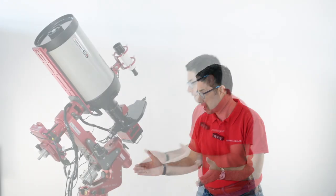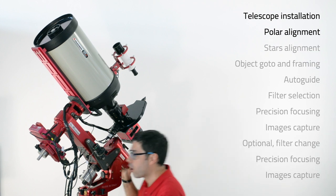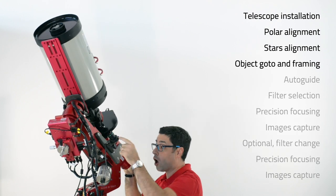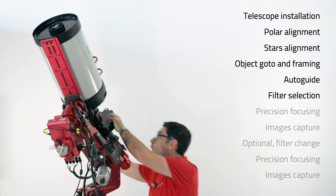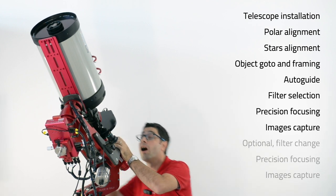A typical long exposure astrophotography session requires installation of the telescope in the field, polar alignment, alignment of the mount to the stars, pointing the object to record, start of the autoguide, selection of the filter, precision focusing, capture of many pictures.